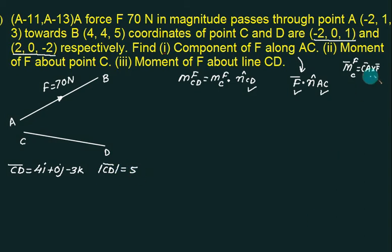Let's go for CA. So CA bar. CA is this point. And A is this point. Minus 2 minus minus 2. Minus 2 minus minus 2. 0i. 0, 1j. And 3 minus 1. 2k. So what is CA? Under root of 1 square plus 2 square. This one is root 5.